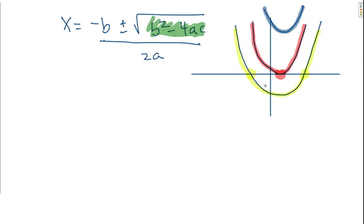And this thing here is known as delta, which equals b squared minus 4ac. And we call it the determinant.